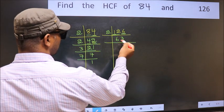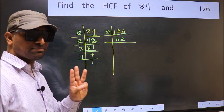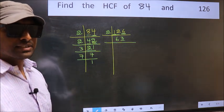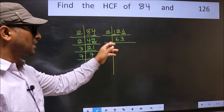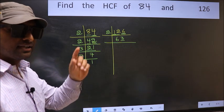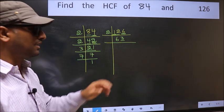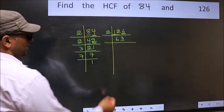Now last digit 3, not even, so not divisible by 2. Next prime number 3. To check divisibility by 3, we should add the digits. 6 plus 3, we get 9 and 9 is divisible by 3. So this number is also divisible by 3. So take 3.